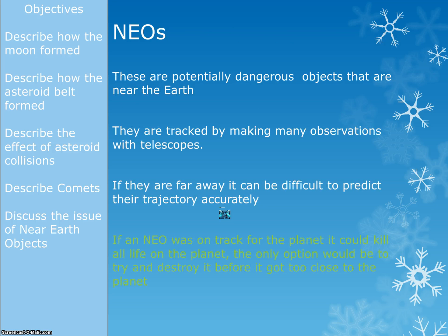Near-Earth objects are objects likely to come near the Earth at some point, which could potentially be dangerous, since asteroid impacts can cause extinction. We have to track these by making lots of observations with lots of telescopes. It's very difficult to predict if they'll actually make an impact or how close they'll come, because the distances involved are huge. If our calculations are off by even half a percent, that could be the difference between hitting us and maybe not even entering our solar system. So there's a lot of uncertainty until they get closer.